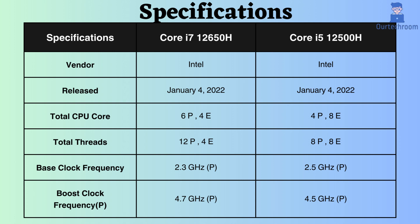Both of these processors were released on January 4, 2022. The Core i7-12650H features 6 performance cores and 4 efficiency cores, while the Core i5-12500H has 4 performance cores and 8 efficiency cores.